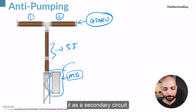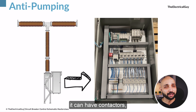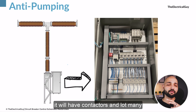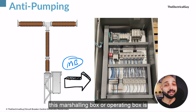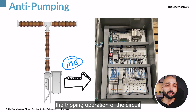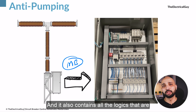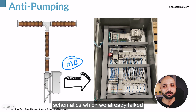What we call the secondary circuit holds a lot of things. For example, it can have contactors, different push buttons, different wiring logics installed into it, and many other things. This marshaling box or operating box is responsible for making sure that the closing operation and the tripping operation of the circuit breaker happen smoothly. It also contains all the logics necessary for the circuit breaker's correct operation — this is what we call control schematics, which we already covered in a previous video.